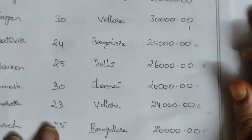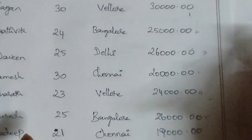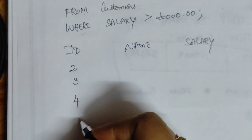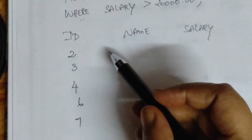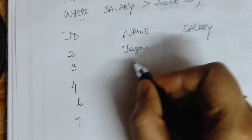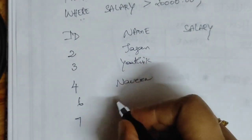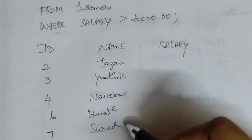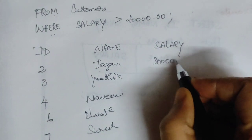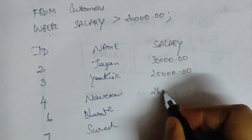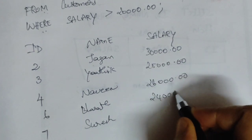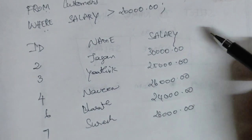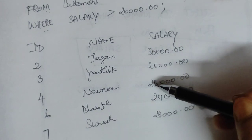How many tuples are displayed? The tuples displayed are ID number 2, ID number 3, ID number 4, ID number 6, and ID number 7. The corresponding names are Jagan, Yathvik, Naveen, Bharath, and Suresh. These IDs and names have salaries greater than 20,000: 30,000, 25,000, 26,000, 24,000, and again 26,000. These are the tuples that satisfy the condition of salary greater than 20,000. This is the query output.